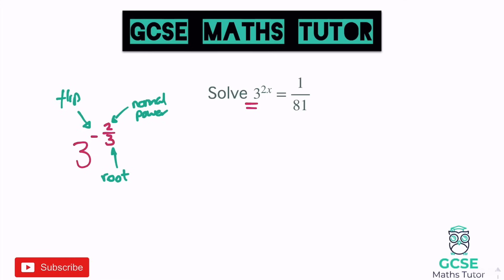Thinking about what's happened to the 3 in this scenario: it's turned into 81 and it's flipped over, so we already know it's going to be a minus power — 3 to the power of minus something. There are no roots involved, so it won't be a fraction. We just need to figure out which power gets us to 81: 3 squared is 9, 3 cubed is 27, 3 to the power of 4 is 81. So it's 3 to the power of minus 4.